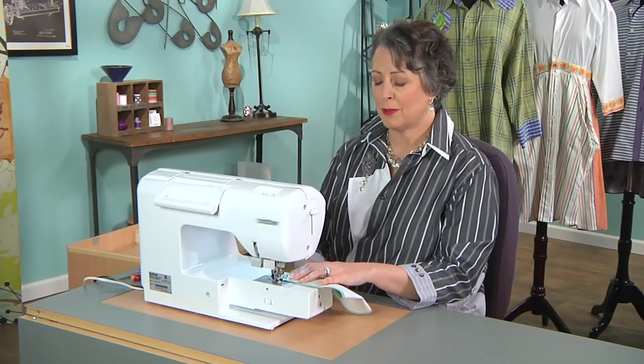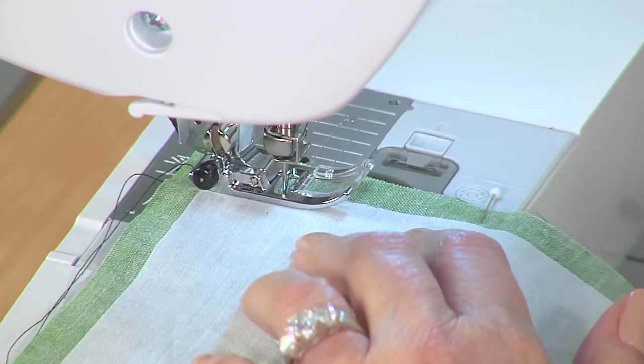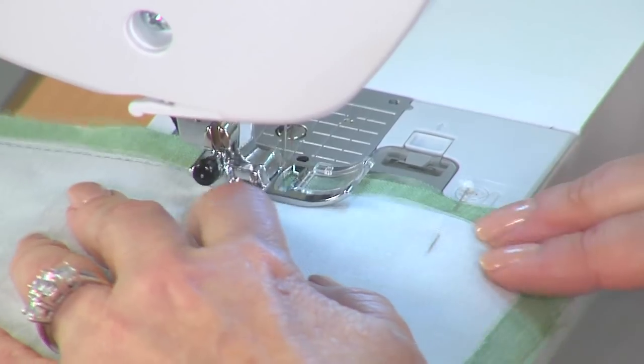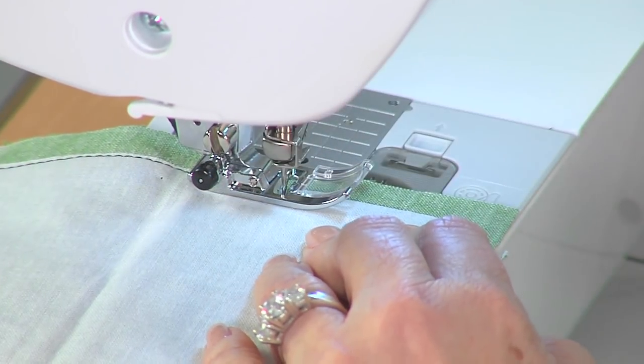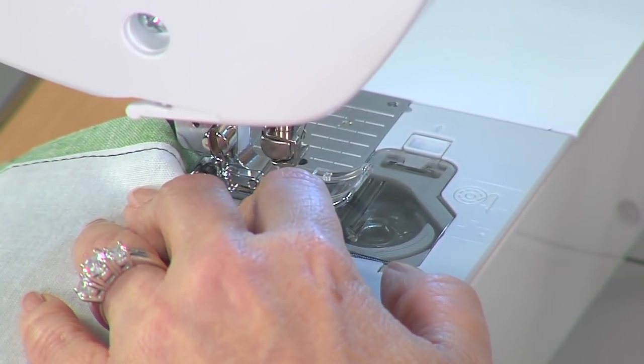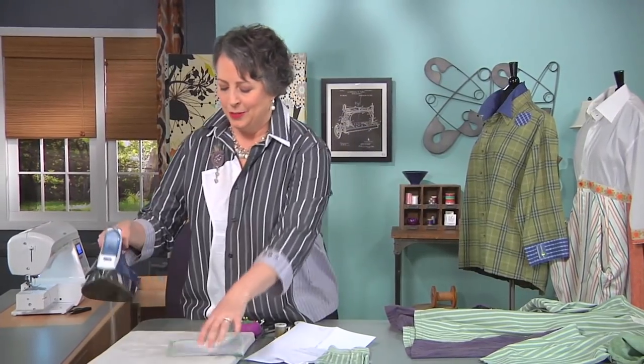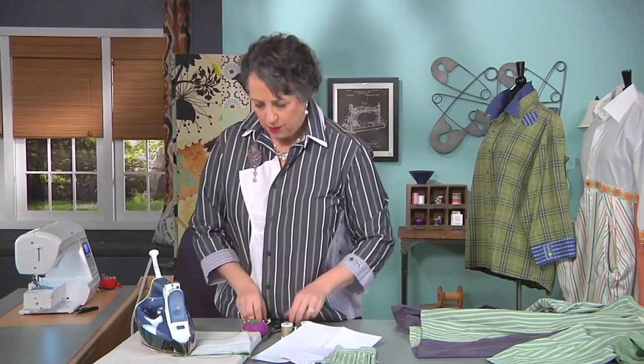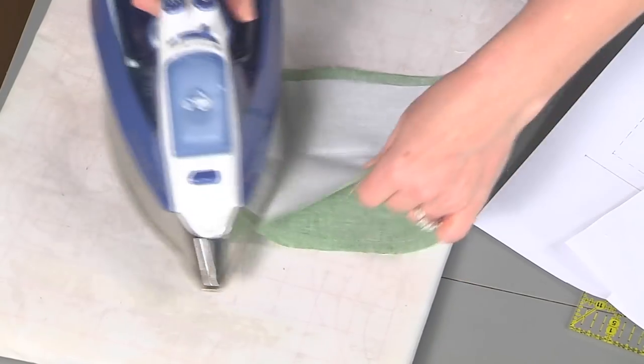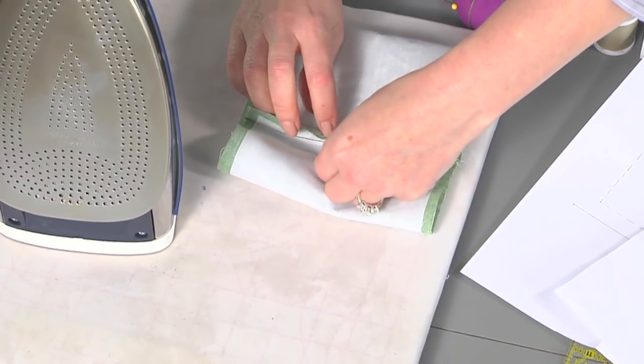We're going to use a half inch seam allowance. Let's open this up. We can press it as sewn first to set the seam, and then open it up and press it open.